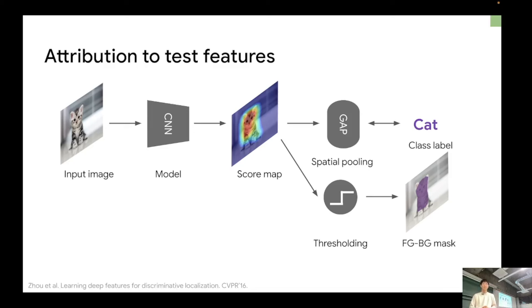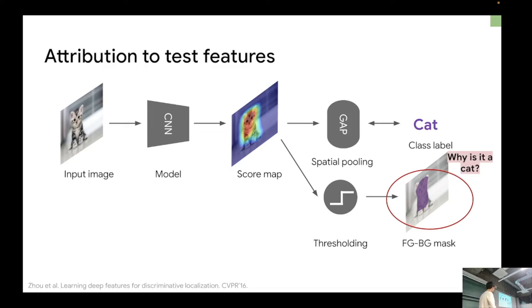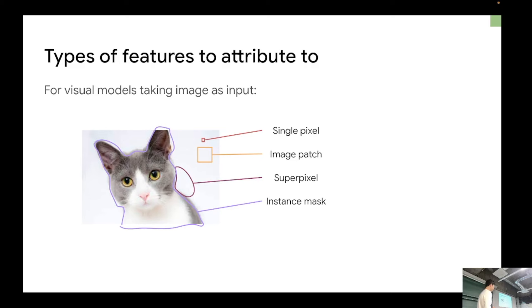We'll go into more detail on CAM next time. What's important here is to identify two important outputs from the network: one is the prediction, but the other is why you think the prediction is a cat. In this case it's in the form of a heatmap — assigning importance to different features of an image.